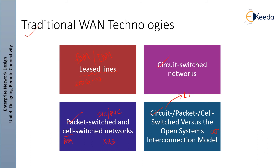In contrast, packet and cell switch networks operate at the data link layer — Layer 2 of the OSI model. They use protocols that define methods to control access to the physical layer, allowing many conversations to multiplex over the same physical transmission medium. This is achieved by framing binary transmission at Layer 2 and providing addressing to identify the endpoints of the data link. Virtual circuits, either permanent or switched, provide a logical path between endpoints, similar to how circuit switching creates a physical path.